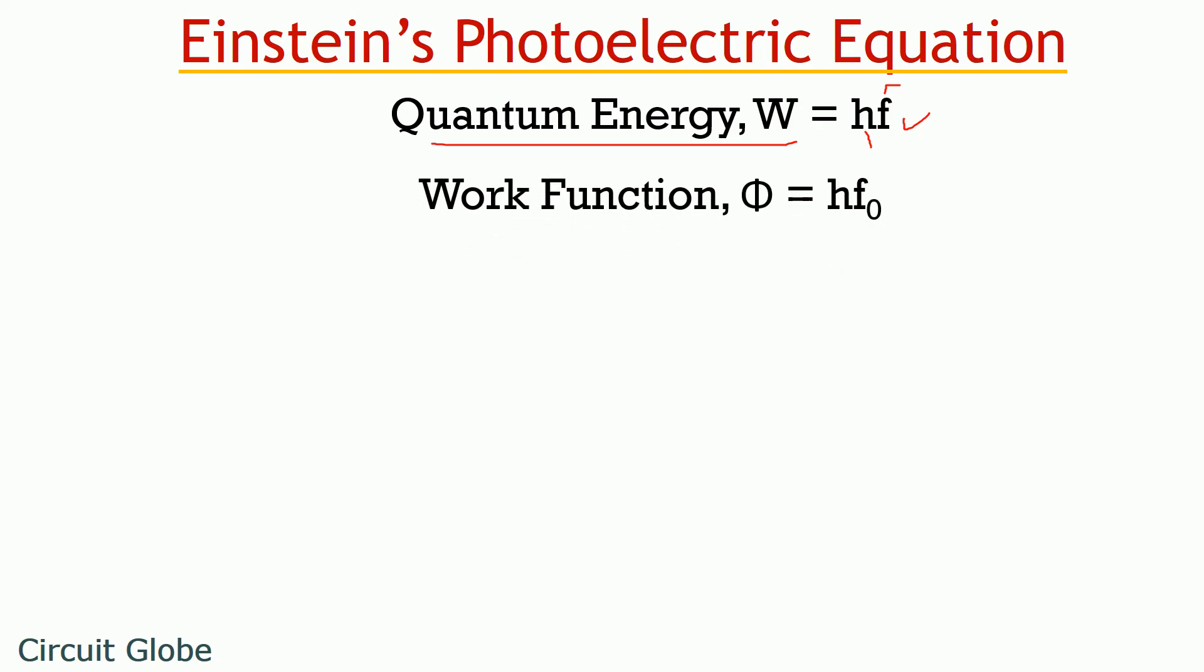Also, the work function of the metal which is denoted by phi is given as H into F0, and this F0 is the minimum frequency which is required to cause photoemission. This F0 is sometimes termed as threshold frequency of the metal. Also, the kinetic energy of photoelectron is given by the difference between quantum energy and work function. So basically, the kinetic energy of photoelectron is nothing but the extra energy which is achieved after subtracting the work function from quantum energy.